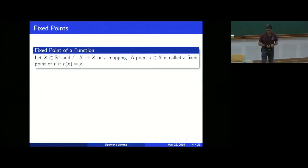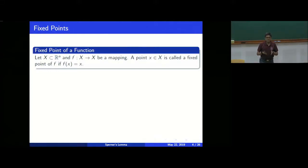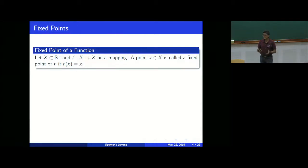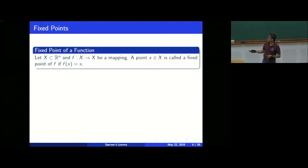Let's come to the main point: fixed points. Amal will use the Brouwer fixed point theorem — sometimes people use Kakutani's fixed point theorem. Fixed point theorems are generally used to prove results such as the Nash theorem. A fixed point is when you enter a value into a function and it gives you back the same value — you enter x and you end up with x.